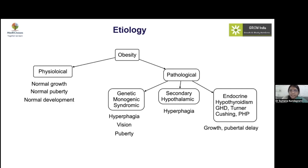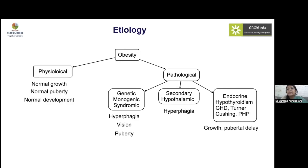Coming to the etiology of obesity, there are two arms: exogenous (physiological) obesity and pathological obesity. In physiological obesity, no definite pathology is found — 98% of obese children fall into this category, likely due to increased dietary intake, with normal growth, puberty, and development. In pathological cases there are genetic causes (monogenic obesity), syndromic obesity with hyperphagia, visual or hearing disturbances, and delayed puberty, as well as hypothalamic obesity and endocrine causes.